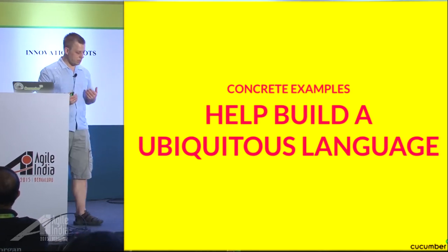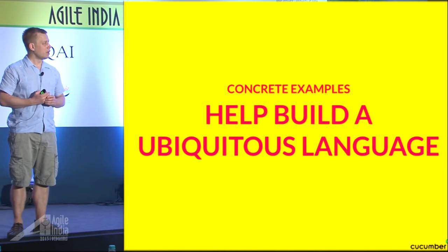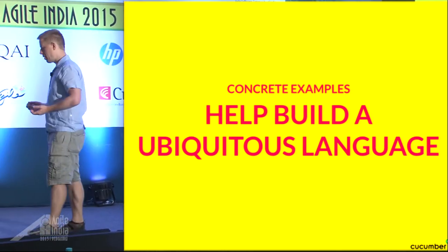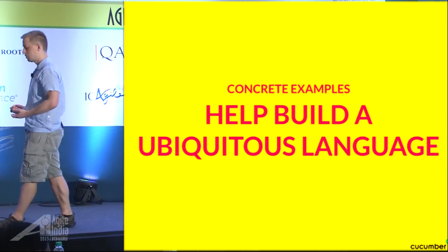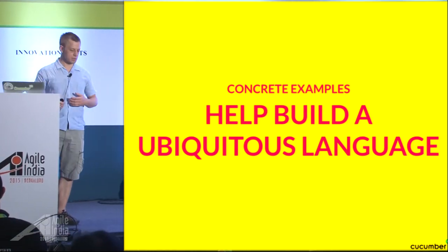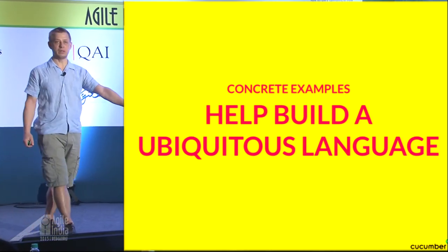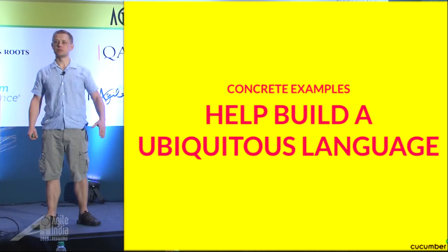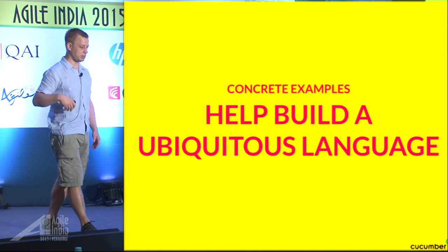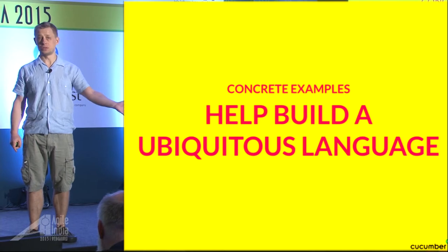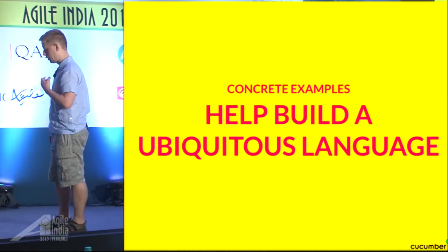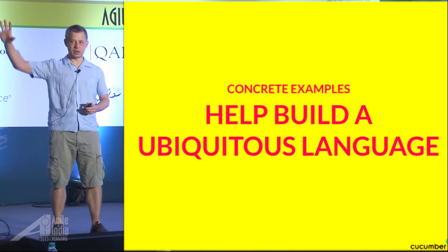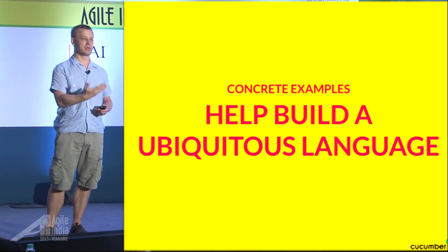You have to have ubiquitous language — another concept from Domain-Driven Design. Ubiquitous language is a language that is everywhere, meaning the words that business people and users use must also be used in the solution domain — in the code. If people are talking about 'customers' in the shops, it's a big mistake to model them as 'users' in the software, because that creates misunderstanding.